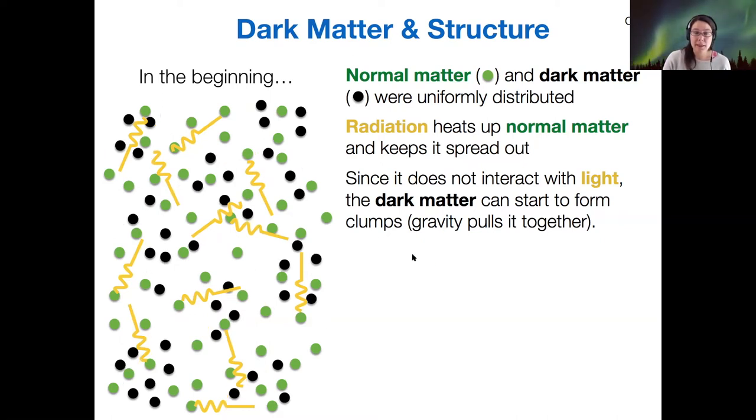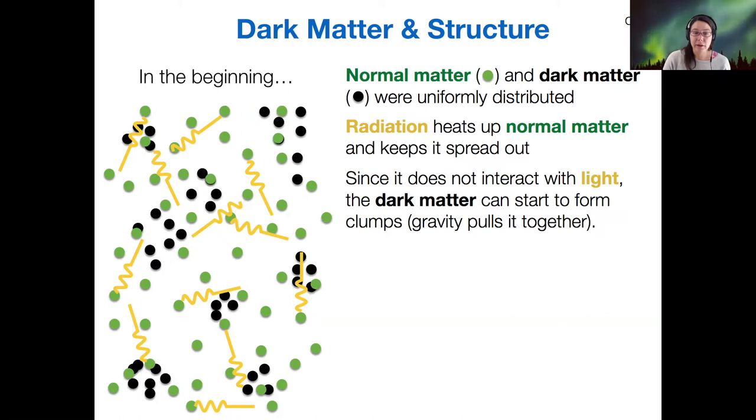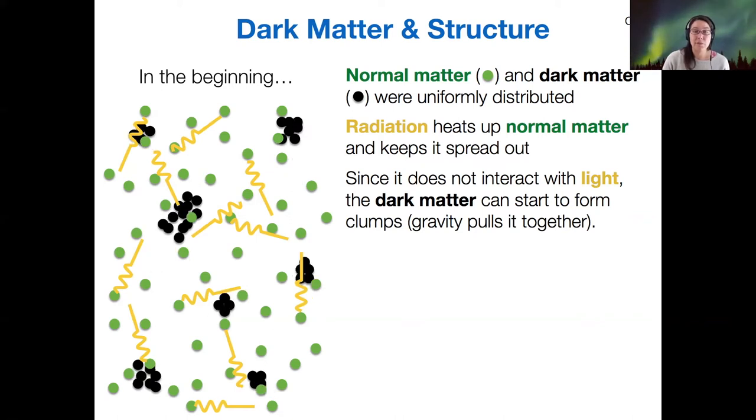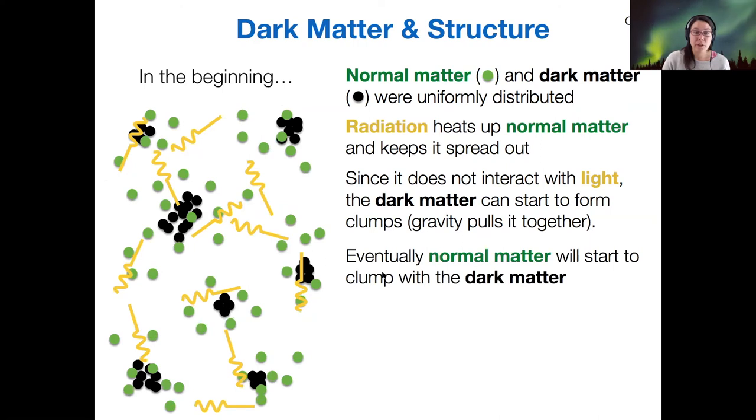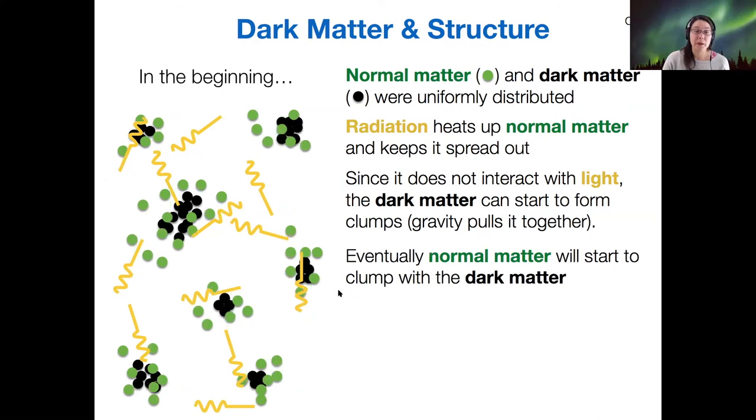And over time, as it clumps closer and closer together under its own gravity, because it's not being affected by that radiation, then it also starts to impact the normal matter particles. Because the dark matter and normal matter, they can still attract each other due to gravity. And so eventually the normal matter also starts to clump together with the dark matter.